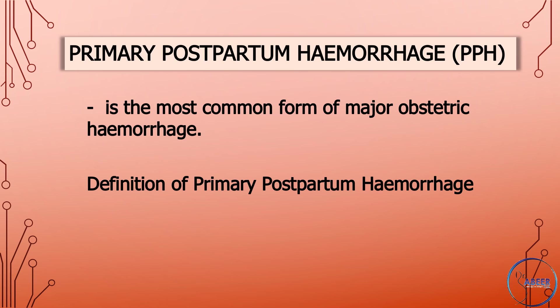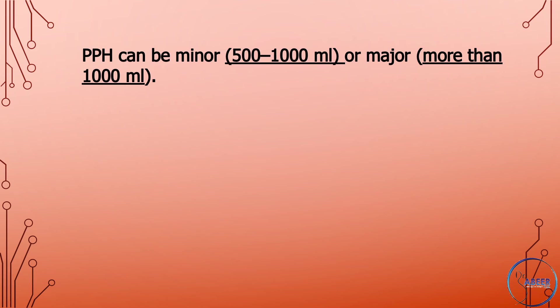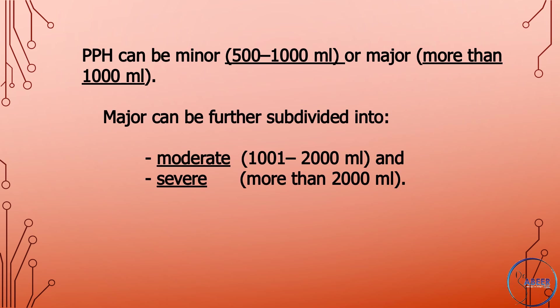Definition of primary postpartum hemorrhage is the loss of 500 milliliters or more of blood from the genital tract within 24 hours of the birth of a baby. Postpartum hemorrhage can be minor, 500 to 1,000 milliliters, or major, more than 1,000 milliliters.